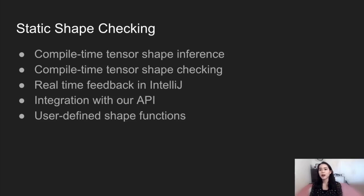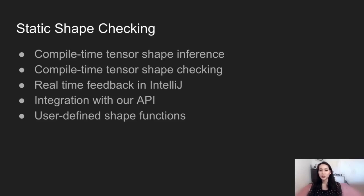To address this issue, we're developing a compiler plugin for static shape checking. With this plugin, users will get not only compile-time shape inference and shape checking, but also real-time feedback in IntelliJ, such as error messaging and red-lining. Users can also inspect the shapes of their tensors as they develop — before they even build or run their code. The plugin is integrated with our API, which means you can get static shape checking out of the box for numerous tensor operations. And lastly, the plugin functionality is extensible, since there are many tensor operations with complex shape transformations and it's important that users can define their own shape functions.